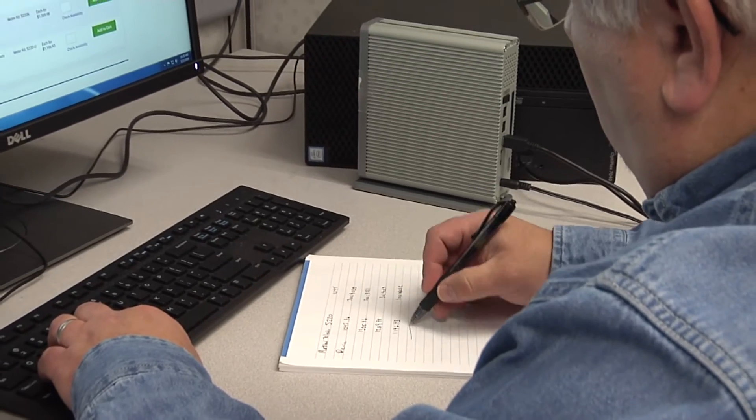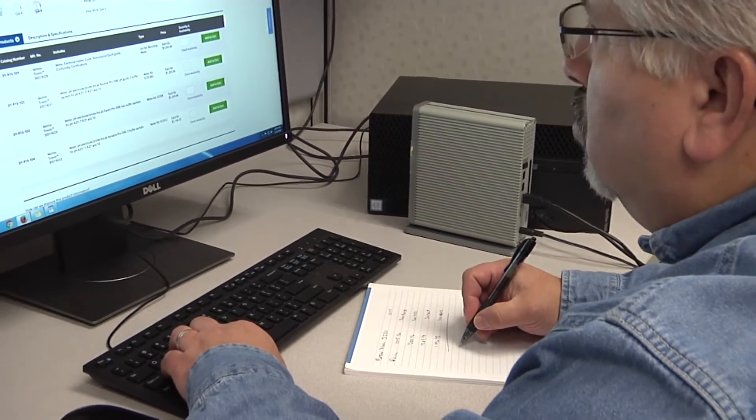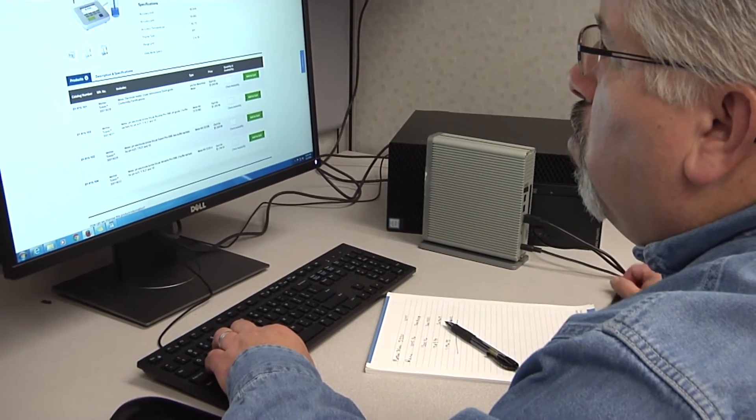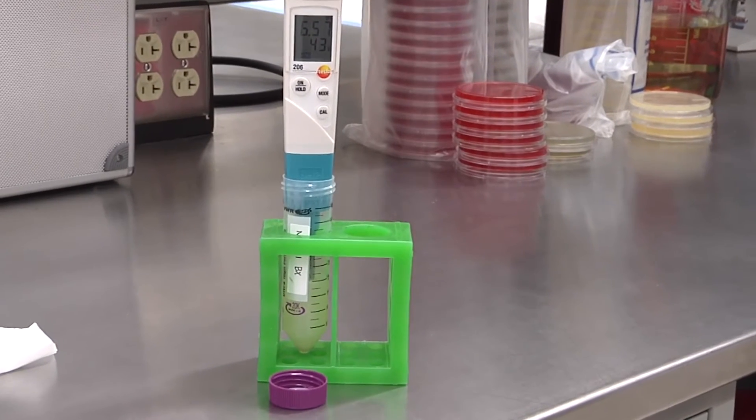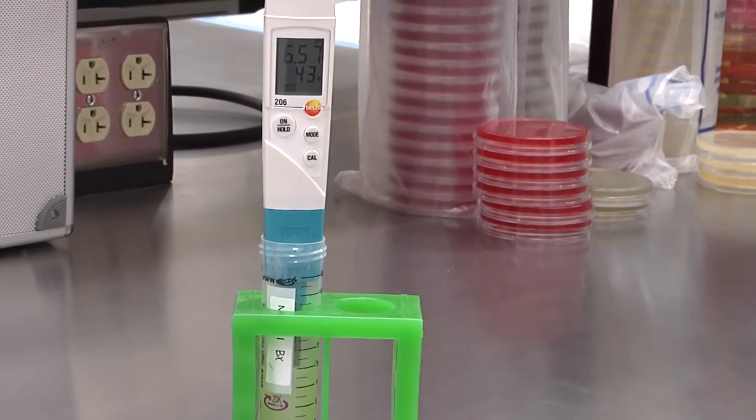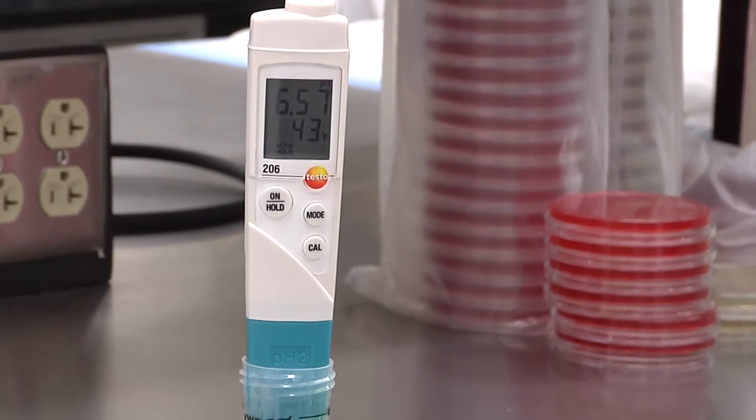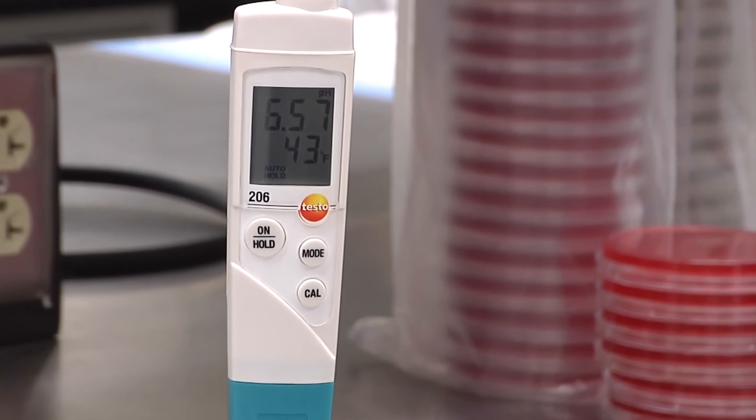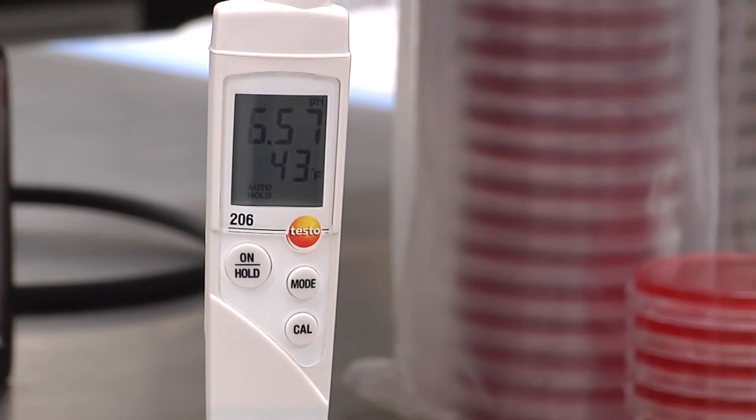First, you need to decide what level of financial flexibility your facility has to spend on a pH meter and electrode, and how portable the meter needs to be. If you are measuring cold samples, consider utilizing an electrode that calculates and compensates for differences in temperature. The meter chosen should measure in the hundredths place, and the accuracy should be at least plus or minus two hundredths.